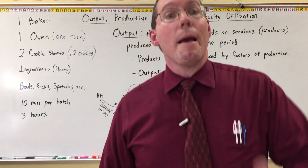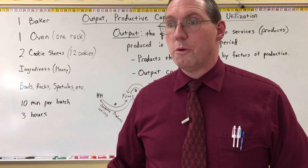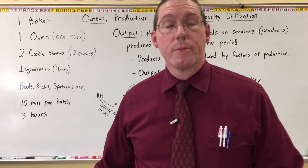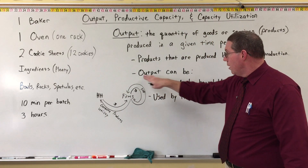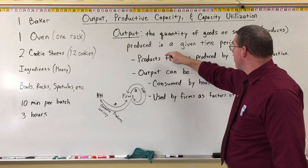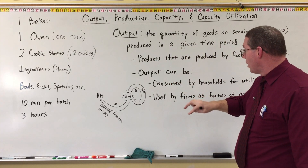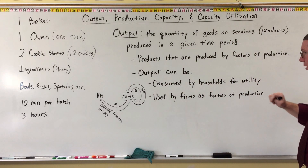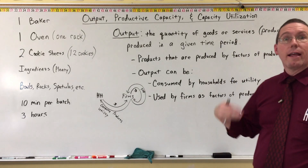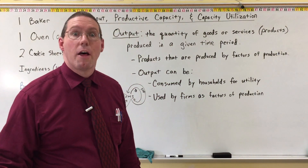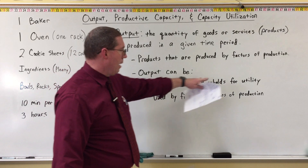Another example: a computer. When I buy a computer, I'm usually using it for my own personal purposes at home — browsing the internet, banking online, buying things on Amazon. But when businesses buy computers, they're usually buying them so that they can make money. When Dell produces a computer, that computer is output — it's a product produced in a given time period. I consume it as a household for utility, but firms buy a Dell computer as a factor of production so they can provide a good or a service — a product of another kind. Those are the two things you can do with output, depending on whether it's being used by a household or by a business.